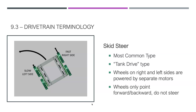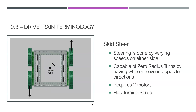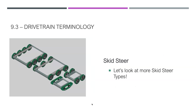The next type is skid steer — the most common type, which we call tank drive. We've used this throughout the semester, mounting all four wheels, but turning one wheel at a slower pace than the other causes the actual turn. This drivetrain can do a zero-radius turn and can turn relatively quickly. Only two of the wheels are typically motorized and controlled by motors; the others are free-spinning. This type does have turning scrub, and the turning point is in the middle.